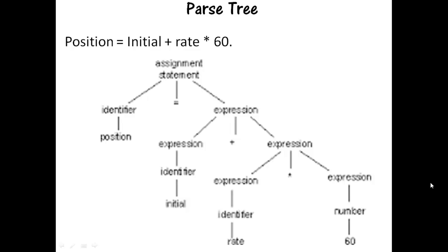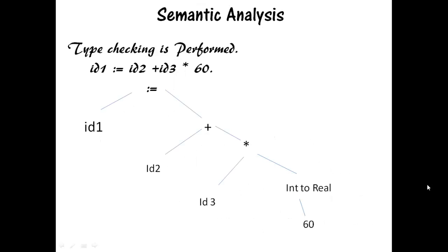Semantic analysis performs certain checks to ensure that the components of the program fit together meaningfully. In semantic analysis, type checking is performed, which is an important component. Consider the example: here rate is of type real. To perform multiplication, integer 60 has to be converted to real. So an extra node is created to specify int-to-real conversion that explicitly converts integer to real.